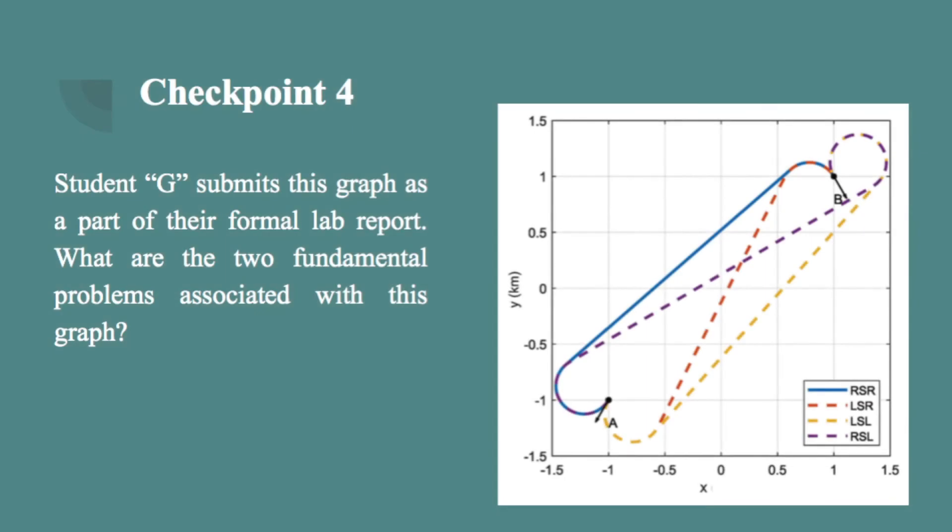Checkpoint question 4. Student G submits this graph as part of their formal lab report. What are the two fundamental problems associated with student G's graph on the right? Click pause to see if you can identify the two fundamental flaws with this graph.